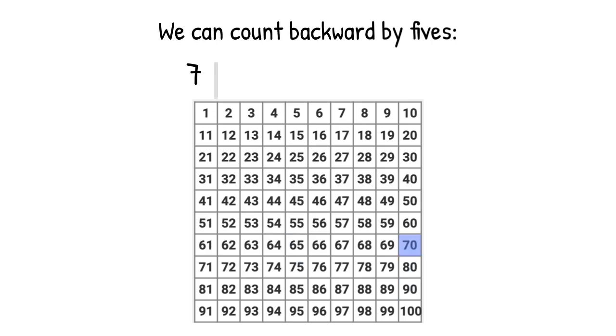We can count backward by fives. 70, 65, 60, 55, 50, 45.